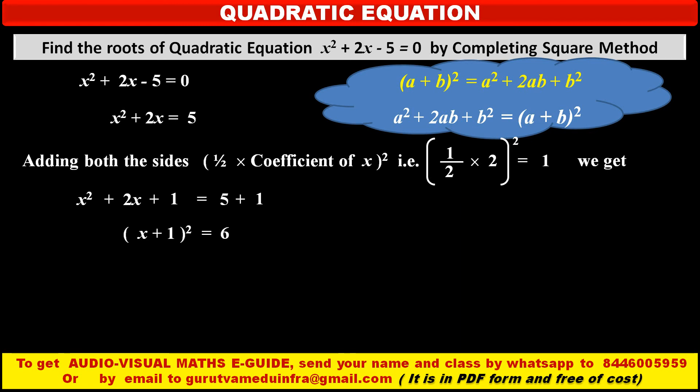So by taking square root on both the sides, we get x + 1 = ±√6.